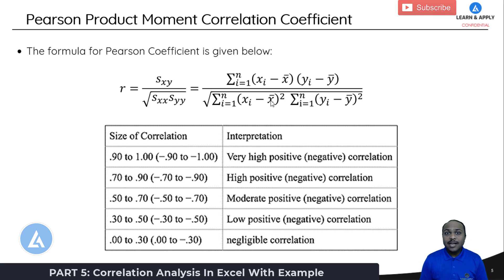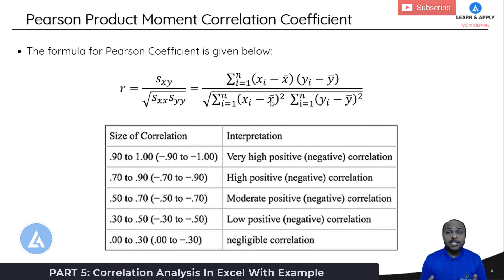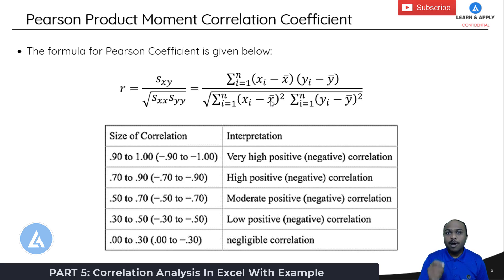Till this point we have seen the entire theoretical part of the correlation analysis — what is correlation analysis, how we can say whether the variables are correlated or not, what kind of relationship they have, and what is the strength of their relationship. Now let's understand this correlation analysis with the help of one practical example.